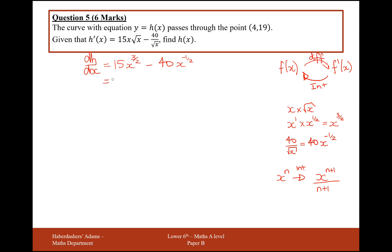So let's do that with this question here. So it's starting with a 15x. Increase the power by 1, so it's 1.5 at the moment. Increase that to 2.5, which is 5 over 2. And then we divide by the new power, which is 5 over 2. Take away 40. Increase our power, I mean. So it's a minus half, increase it by 1, it would go to a half. And divide throughout by the new power.